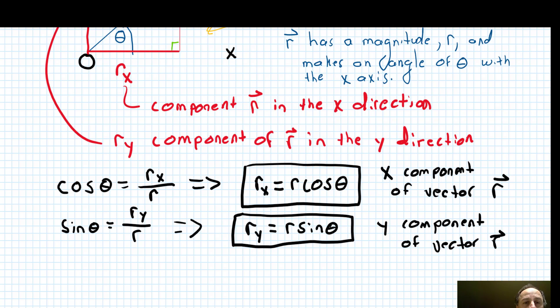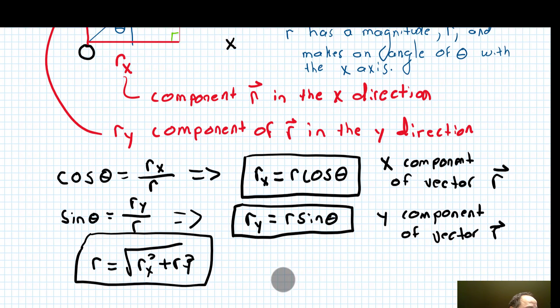And remember the Pythagorean theorem works here because we're dealing with right triangles. So remember that the magnitude of r is going to equal the square root of the squares: rx squared plus ry squared. So you have these three relationships to help you work between the components of the vector and the vector itself.